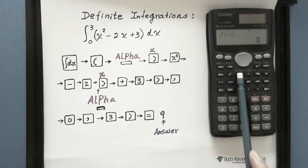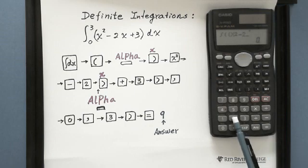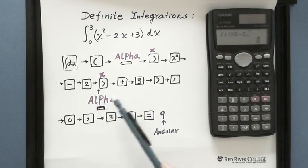Then go to square, hit the square button, and minus 2 times x. When you enter x, always use the alpha button.